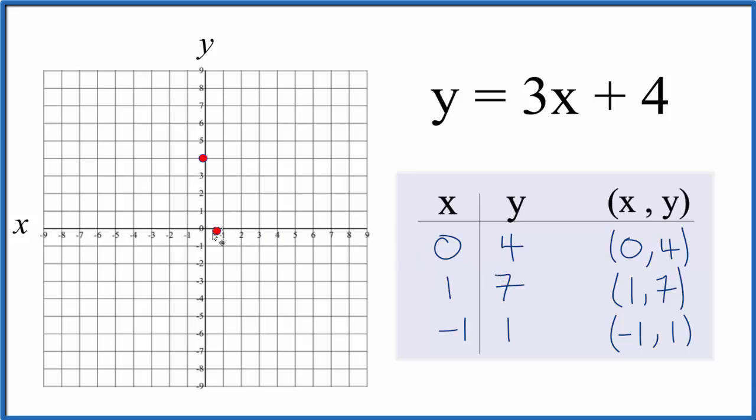Then we have one seven, so we go one and up to seven right there, and finally we have negative one, so we go negative one and up one right here.